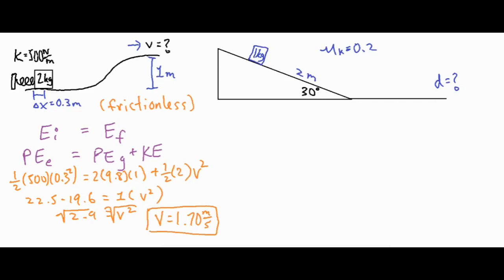We plug in our numbers: the elastic potential energy formula is one-half k x-squared, where x is the amount of compression from equilibrium, equal to mgh — mass 2 kg times g 9.8 times height 1 meter — plus one-half mv-squared. The velocity is our only unknown. The product on the left is 22.5; subtracting the gravitational PE product of 19.6 gives the remaining energy equal to one-half mv-squared. Since one-half times two is one, we square-root both sides to get a final velocity of 1.7 meters per second.